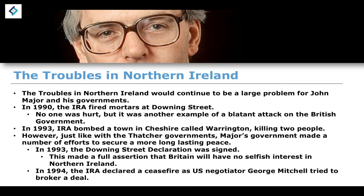So all of these things build up to the Good Friday Agreement. It's important to note that the Good Friday Agreement didn't come out of nowhere — it was the combination and culmination of a lot of work that took place under Wilson, under Callaghan, under Thatcher, under Ted Heath, and then also under John Major. So all of these things start to build together to form the eventual long-lasting peace that we see in 1998.